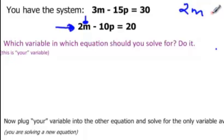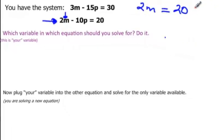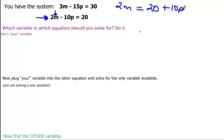So if I solve that, I have 2m is equal to 20, and then I'm going to add the 10p to both sides. And then I'm going to divide everything by 2. So this will be m. 20 divided by 2 would be 10. 10p divided by 2 would be plus 5p. So I'm going to use 10 plus 5p as what I plug into.